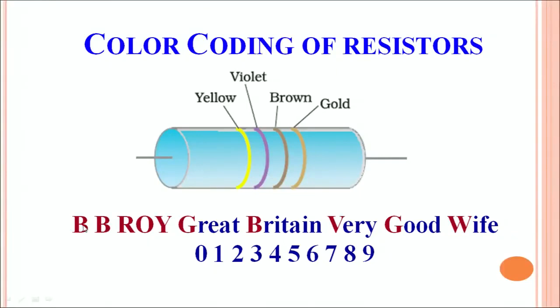Let us now discuss how to read the resistance value using color coding. For that you have to memorize a very simple phrase: B B Roy Great Britain Very Good Wife. All the capital letters have a digital value associated with them. B B R O Y G B V G W. First B is black, black 0, brown 1, red 2, orange 3, etc. Last digit is W that stands for white, which is associated with the digital value 9.